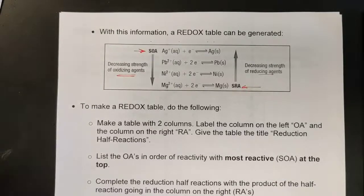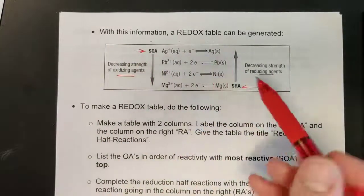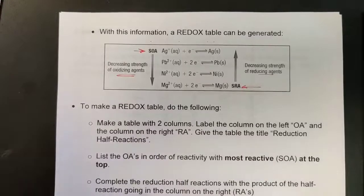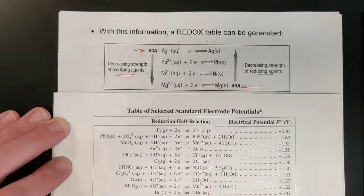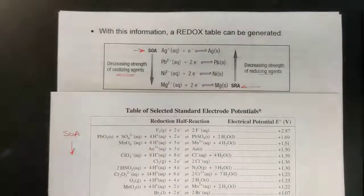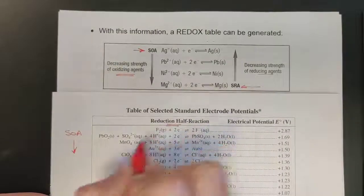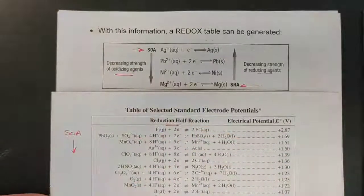The table shows OAs and RAs, so we have reduction reading left to right and oxidation reading right to left — similar to how in thermo we had a table of formation enthalpies that became a decomposition table when reversed. These are reduction half reactions listed here: your strongest oxidizing agent is at the top and your strongest reducing agent is at the bottom right. This is a reduction half-reaction table, so OAs gain electrons as you read left to right; flip it and it becomes an oxidation table.